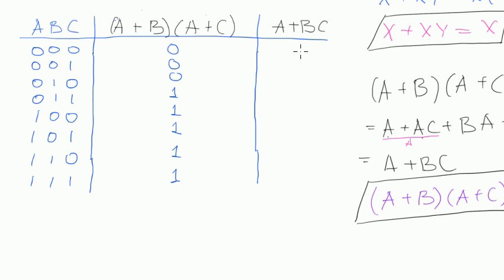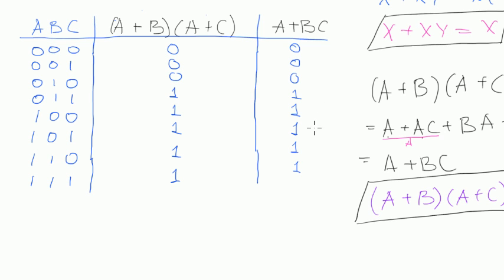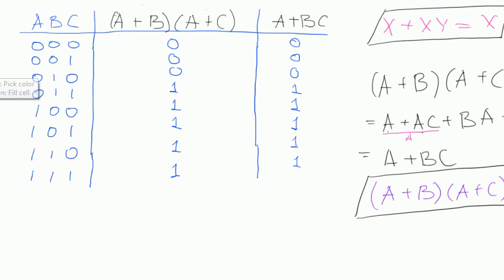Now let's take the right-side expression, a plus bc. 0 plus 0 times 0 is 0. Then c equals 1 — it's still 0 because we multiply by 0. Then b equals 1 — it will be 1 multiplied by 0. Then b and c are both 1: that part equals 1, and the whole expression is 1 plus 0, which is 1. Then a equals 1 — the whole expression equals 1, and for all cases where a equals 1, we can write the whole expression equals 1. For every combination, the results of these two expressions were always exactly the same.